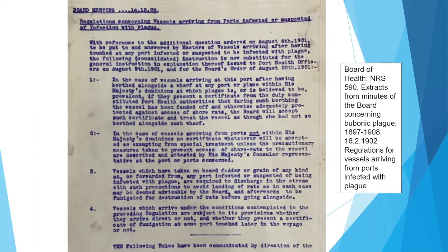Here we've got from 1902 some regulations. They were very focused on vessels entering Sydney ports — how they were to be quarantined, how they were to be cleaned, details of cargo, what to do with it, and how to get rid of rats.